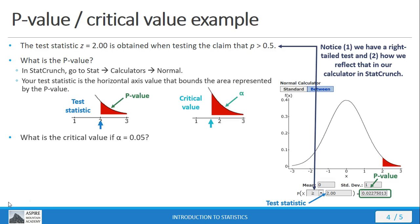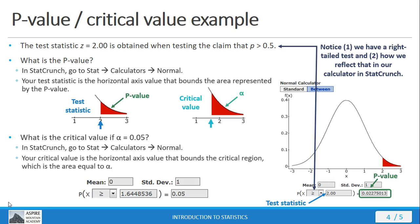So, what's the critical value if alpha is 5%? Well, we go back to our normal calculator in StatCrunch, and we can put that in. Okay? So, remember, the critical value is going to go on the left, and alpha is going to go on the right.